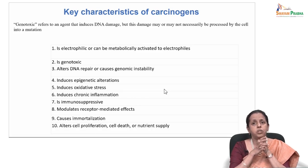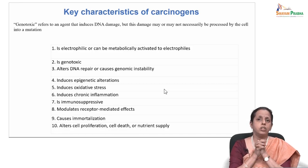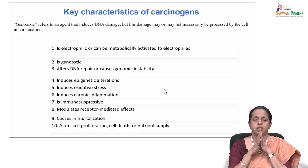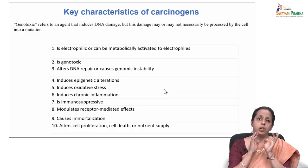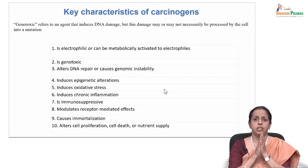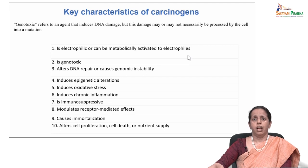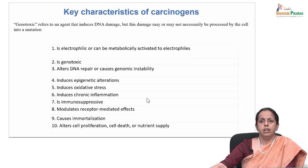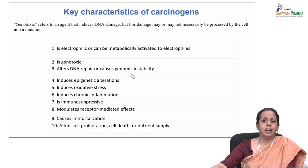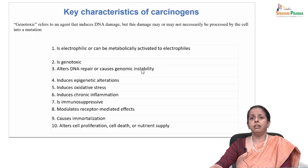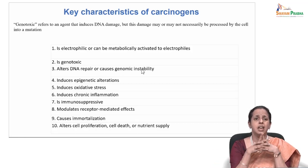If an agent is found to induce DNA damage it is called a genotoxin, and if it is shown that the agent also induces mutations in mutagenicity assays such as the Ames assay, it can be defined as a mutagen. If the carcinogen is able to cause mutations, you can classify it as a mutagen. Electrophiles are electron-seeking molecules that commonly form addition products generally referred to as adducts with cellular macromolecules — they usually form adducts with DNA, RNA, lipids, and proteins.